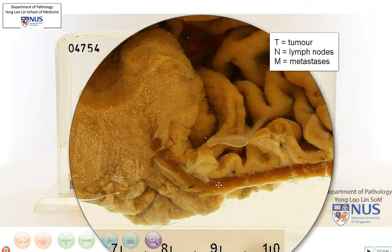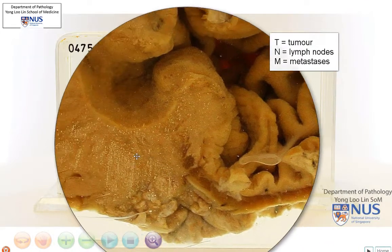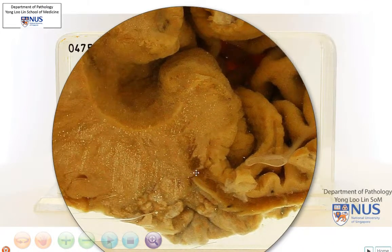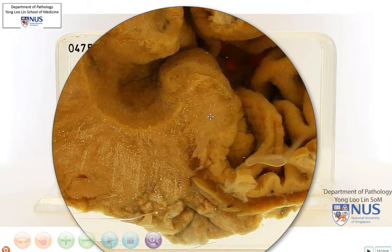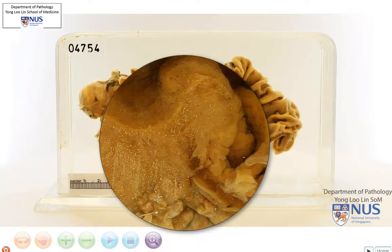If we follow the muscularis propria towards the abnormality, we can see that it disappears here, and this is an ominous sign. It suggests that this mass is invading through the muscularis propria.